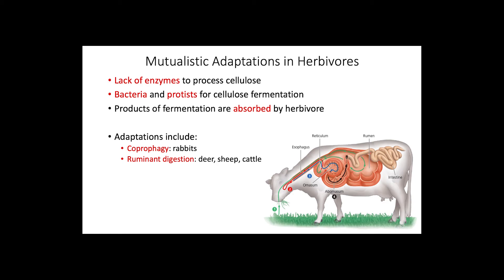Ruminants like cows, deer, and sheep also present an adaptation called ruminant digestion, where the stomach has multiple chambers specialized for different processes. Food first enters the rumen and reticulum, where bacteria digest cellulose. Then the cow regurgitates and re-chews the food, breaking down fibers. The swallowed cud then passes to the omasum, where water is removed, and finally to the abomasum for digestion by the cow's own enzymes. This provides the most efficient absorption of nutrients in these animals.